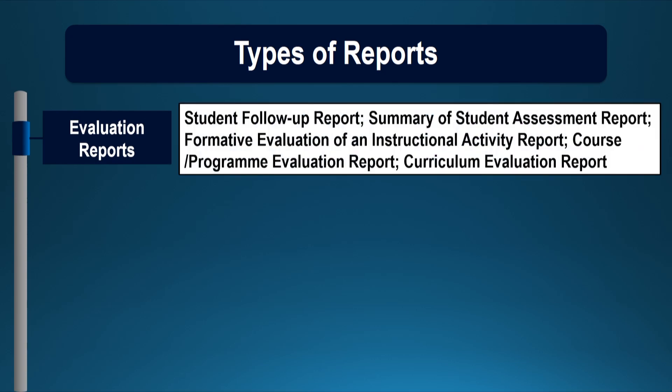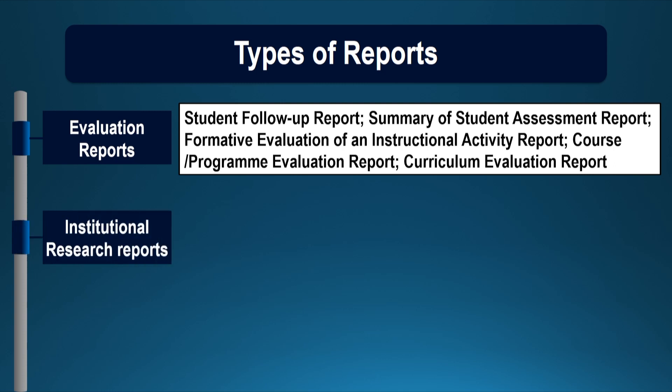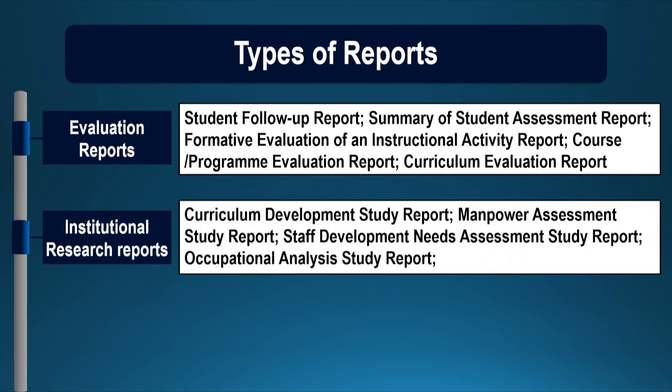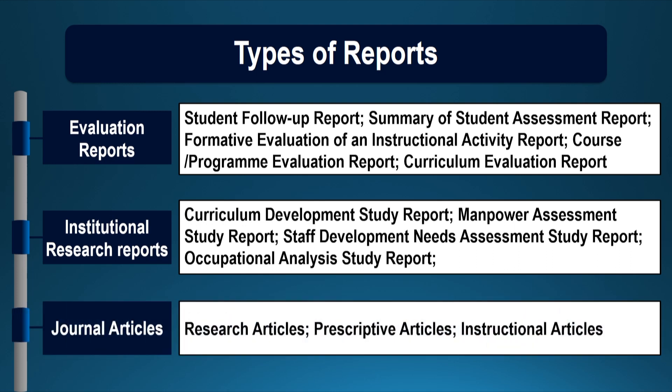In an institution, we can have different types of report: evaluation reports including student follow-up reports, summary of student assessment reports, formative evaluation of an instructional activity report, course or program evaluation report, curriculum evaluation report; or we may have institutional research reports including curriculum development study report, manpower assessment study report, staff development needs assessment study report, occupational analysis study report. We are also interested in writing journal articles — research articles, prescriptive articles, or instructional articles.